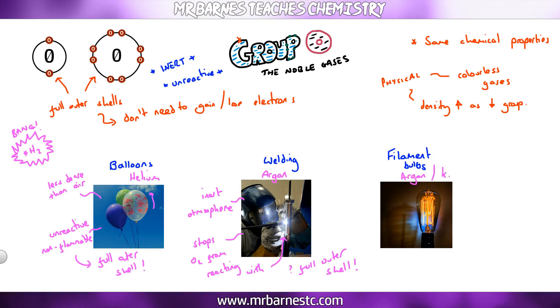And then finally, filament light bulbs. You could use argon or krypton. Again, the reason is it's an inert atmosphere. The actual noble gases won't react with the hot filament, they won't corrode it, they won't break it. And krypton is used in bright lights as well, like flash photography, for exactly the same reason.